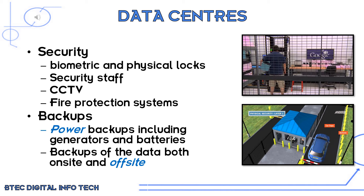Biometric means it scans your fingerprint or retina, or there'll be physical locks requiring keys. Everything will also be on CCTV, so there are records and footage of anyone gaining entry. They also have fire protection — sprinklers and special cooling fluid to make sure everything stays intact so data can be restored. Additionally, they have power backups including generators and batteries to keep everything running until power is restored. They also keep backups of the data on the same site and at another site, so if anything like an earthquake or tornado affected the data site, they would have a backup of your data.